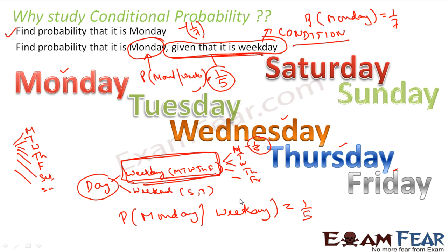If you don't understand this example, don't worry — we will have more examples to clear the concept. The key takeaway is that conditional probability means: find the probability of something given some condition. With that condition, my probability changes. Without any condition, probability of Monday is 1 by 7. Given it is a weekday, my sample space reduces to five options — Monday through Friday — so the probability of Monday given it is a weekday is 1 by 5. This is one example of conditional probability.